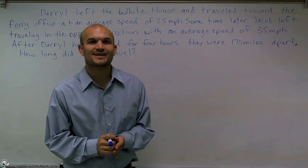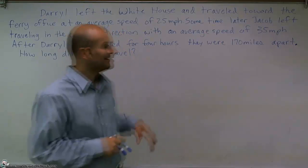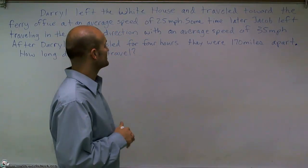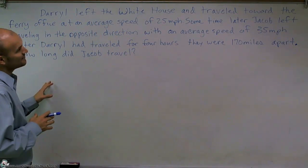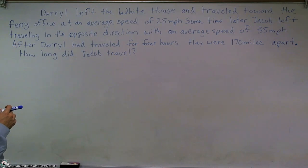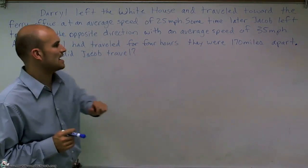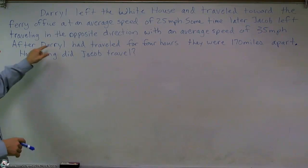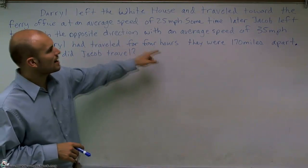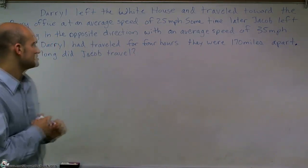Welcome. What I want to do is show you how to solve this distance problem. So I'm going to read this out loud. Daryl left the White House and traveled toward the ferry office at an average speed of 25 miles per hour. Sometime later, Jacob left traveling in the opposite direction with an average speed of 35 miles per hour. After Daryl had traveled for four hours, they were 170 miles apart.